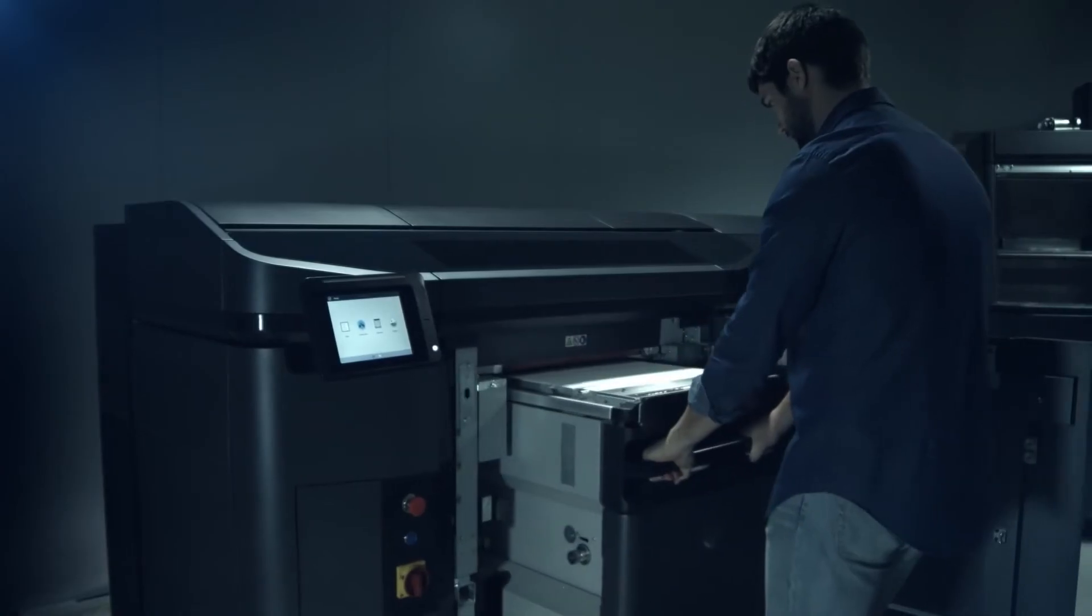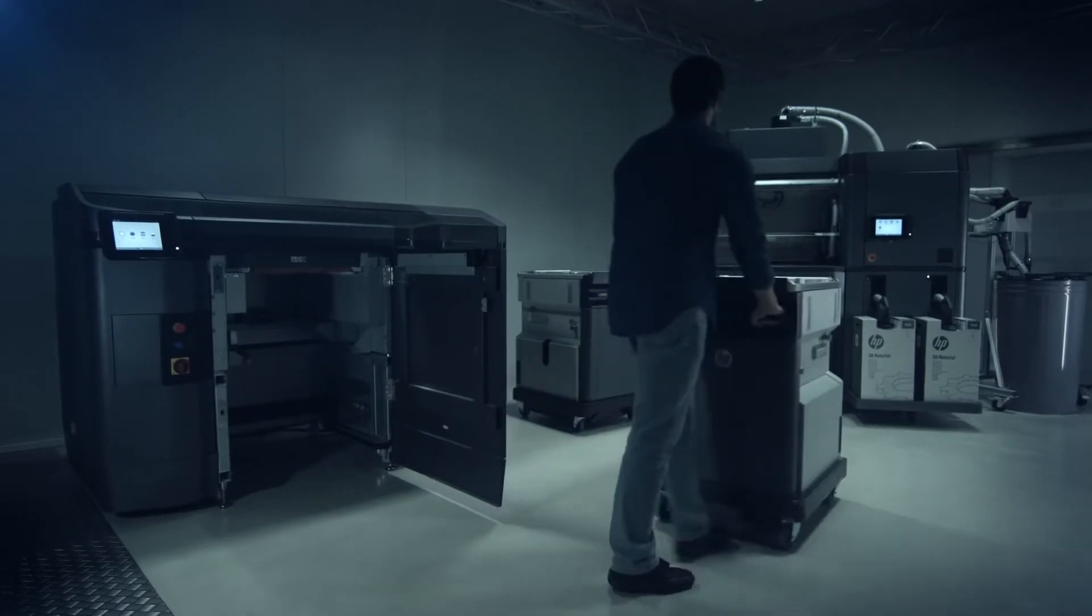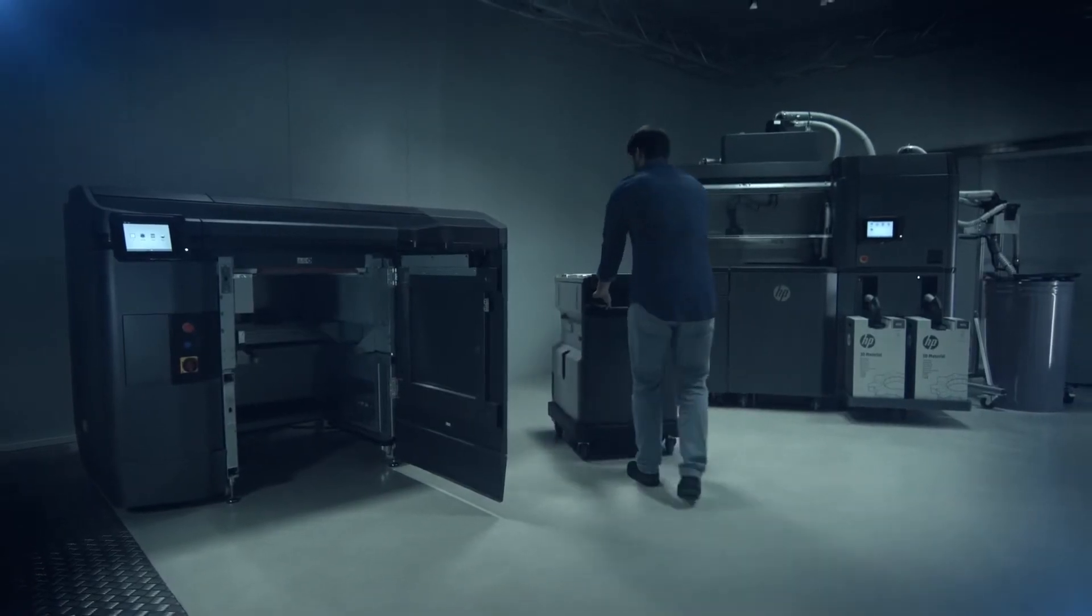The build unit is removed from the printer and taken to the processing station, and the second build unit installed, so you don't have to stop production.